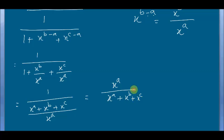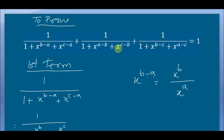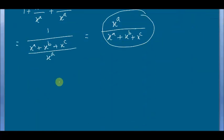This is the first term you got. If you solve the other two terms, this one in the same fashion, then you will get this sum, this result: x^b divided by x^a plus x^b plus x^c.